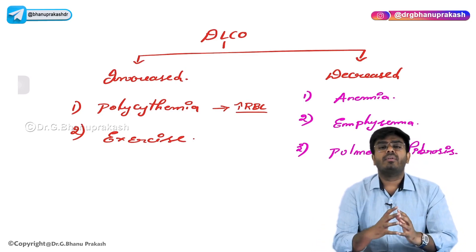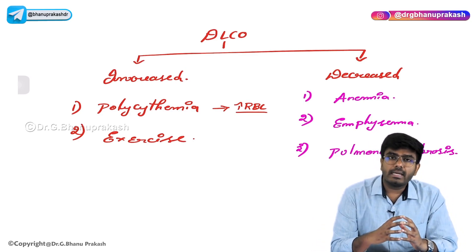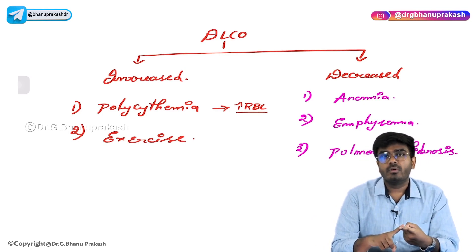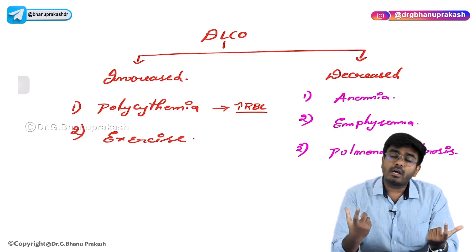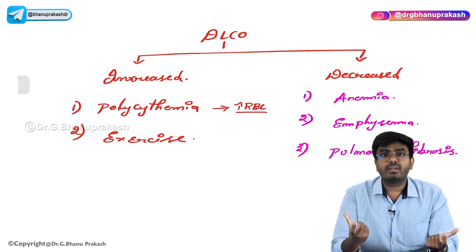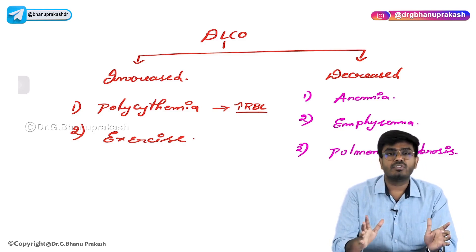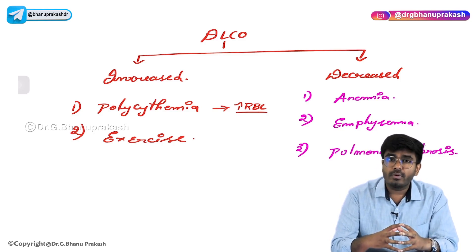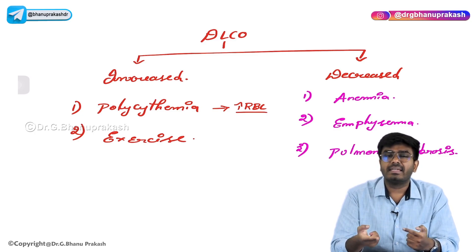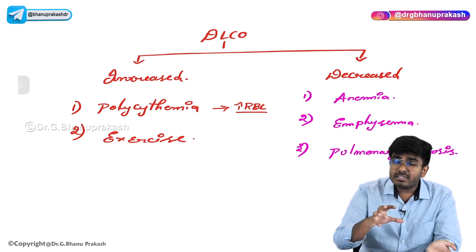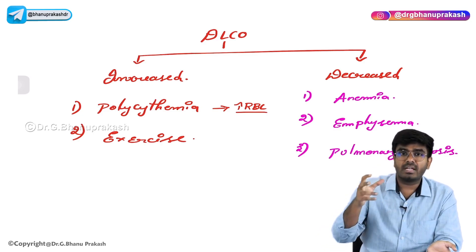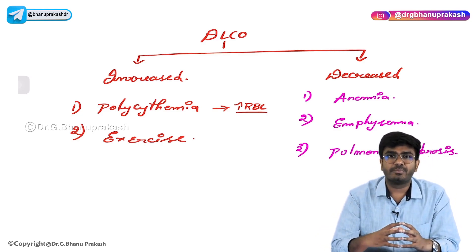With this, we have discussed all the important points regarding diffusion of gases, the measurement of diffusion with DLCO, and Fick's law for diffusion of gases. Hope the video is helpful. In the next video, let's continue with transport of gases in the blood - how oxygen goes to the tissues and how carbon dioxide from the tissues gets back to the lungs. Thank you.